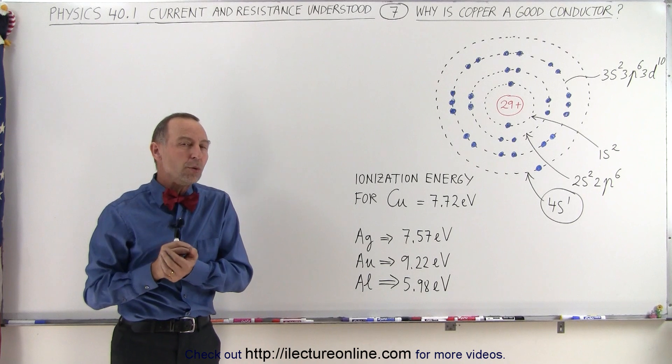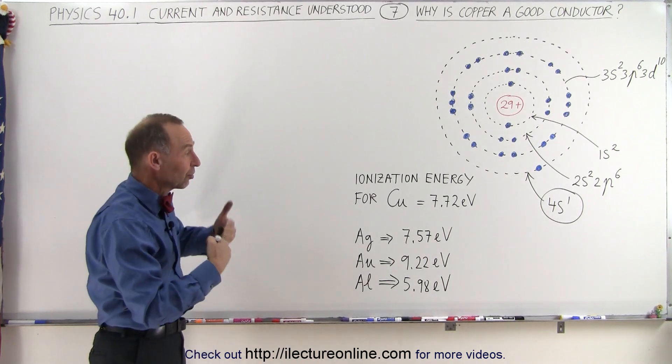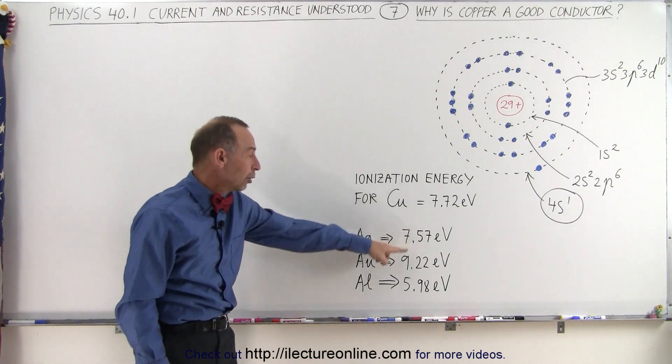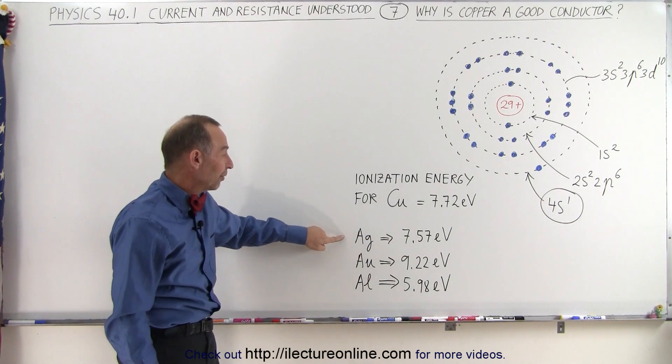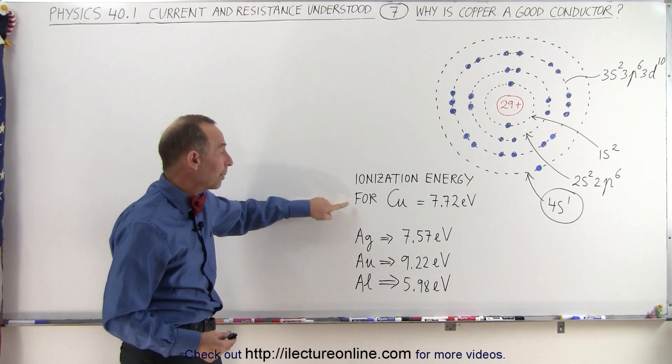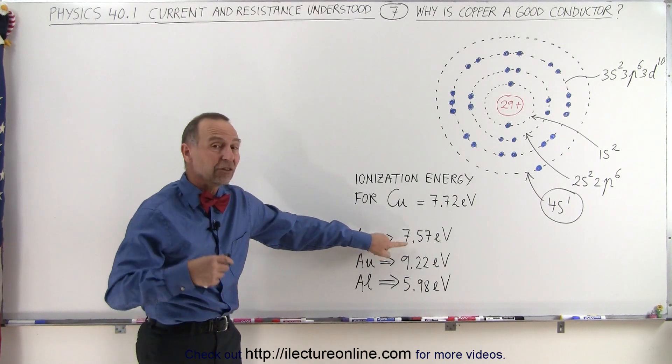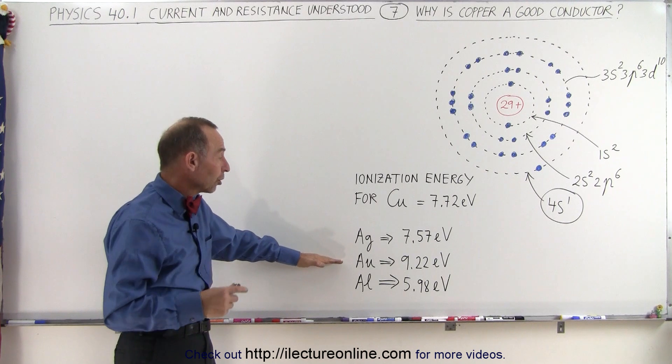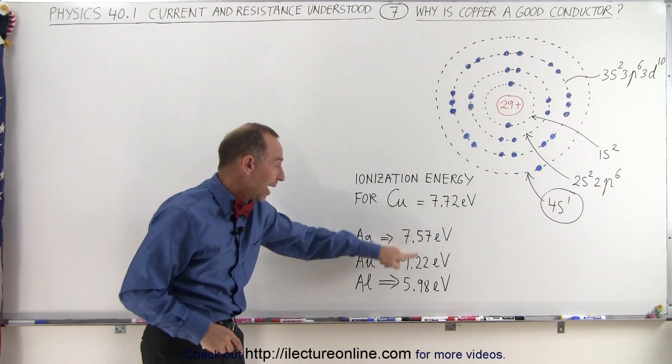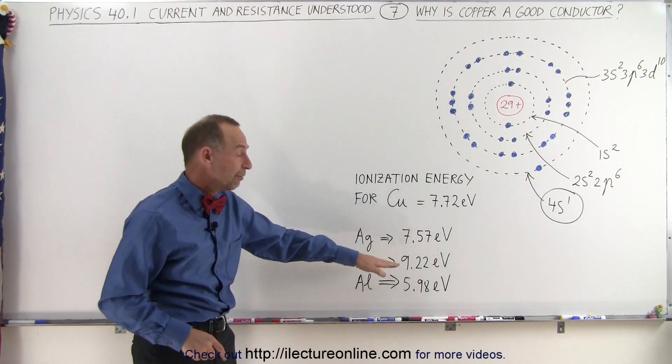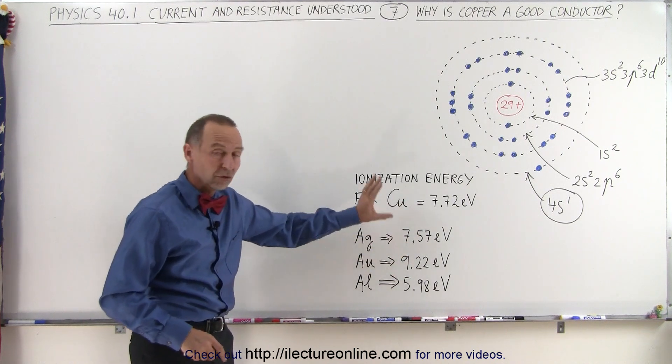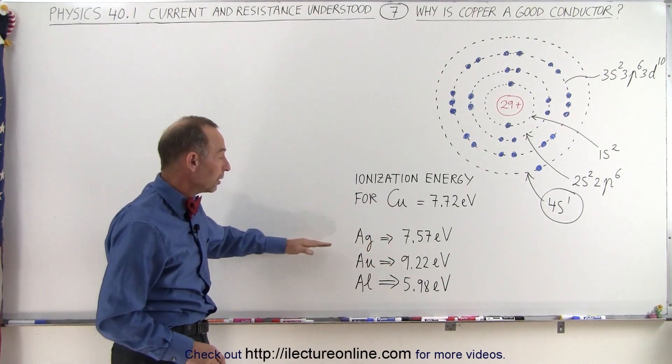Now it's not the only component in the equation to determine if it's a good conductor. Notice silver and gold also have relatively low ionization energies. Silver is a better conductor than copper. It has a slightly lower ionization energy, but that's not the only reason. Gold is also a good conductor. It has a bit of a higher ionization energy. However, gold is not that bad of a conductor either. So there's a close relationship, but not the only equation.